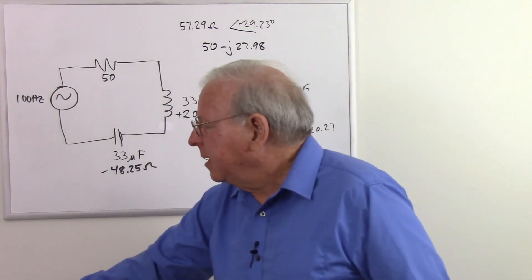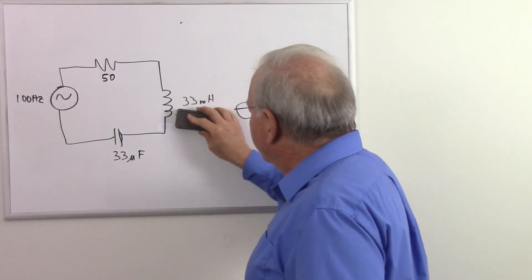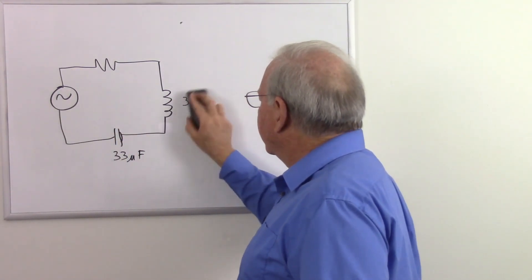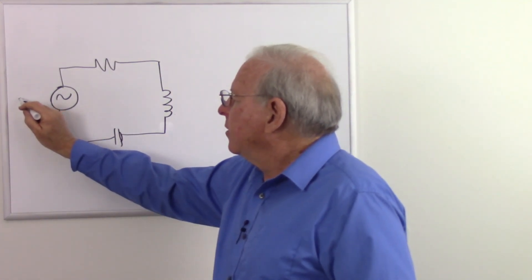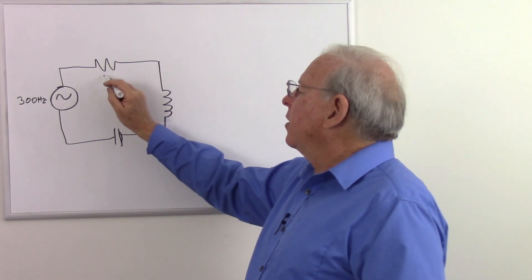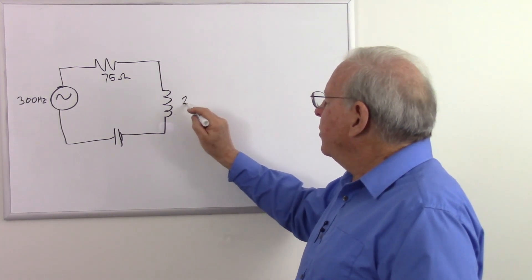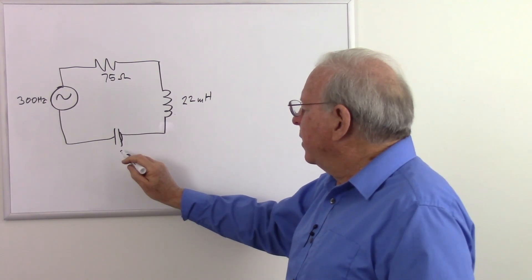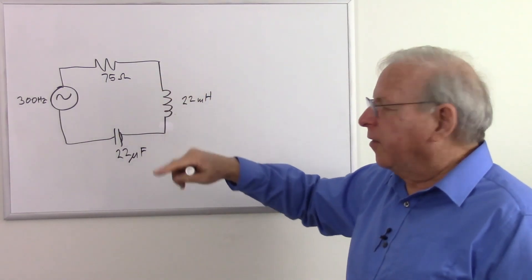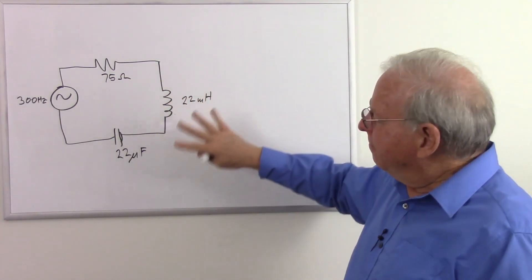Let's do one more problem — just a little more practice. Once you're good at this, you're ready for that certification exam or whatever. Let's mix everything up: 300 hertz, 75 ohms, 22 millihenries, and 22 microfarads. I want numbers that are easy to wrap our heads around.